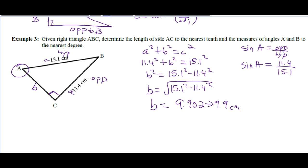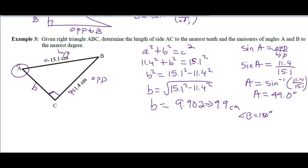If I do have to use a calculated number, I use the whole thing, because that keeps going — 9.902 dot dot dot. Angle A will be the inverse sine of this, which is equal to 49.0 degrees. We know the three angles in a triangle add up to 180, so angle B is 180 degrees minus the sum of the other two angles, which is 90 plus 49, and that's equal to 41.0 degrees.